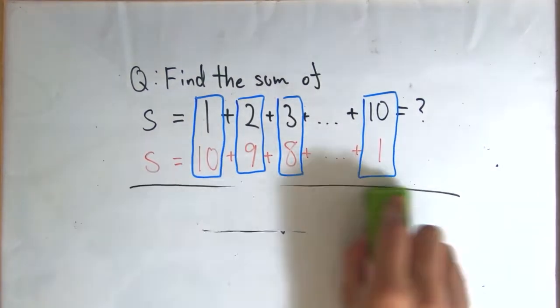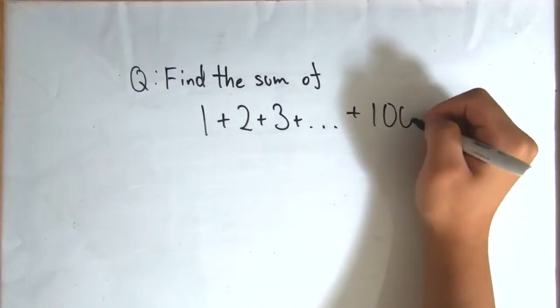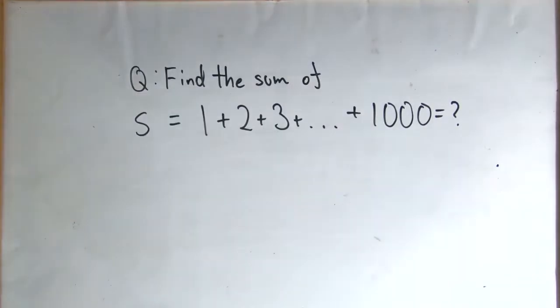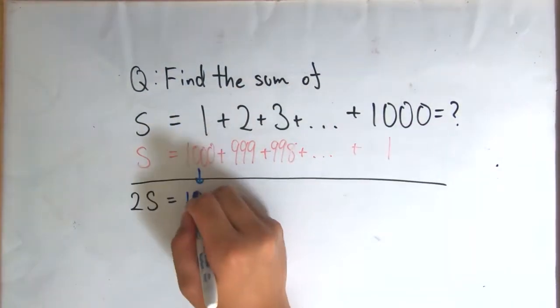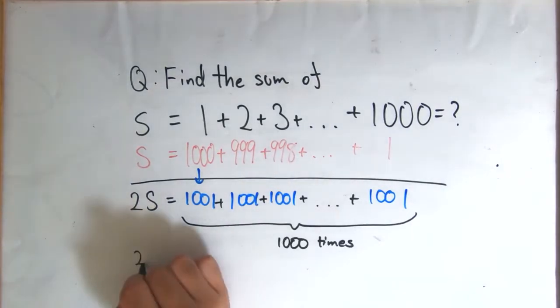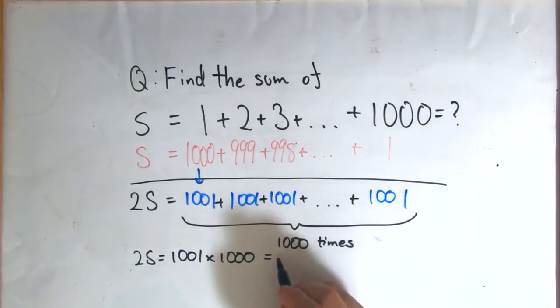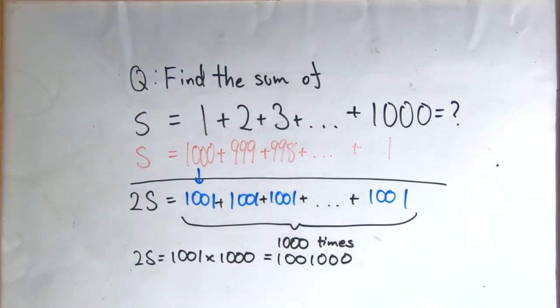With the example of finding the sum from 1 to 1000, we can use a similar approach. This time, instead of 10 plus 1, it is 1000 plus 1 equals 1001, and instead of 10 pairs, we have 1000 pairs. So twice the sum of 1 to 1000 is 1000 times 1001, which equals a million and a thousand. And finally, dividing by 2 gives us the sum of 500,500.